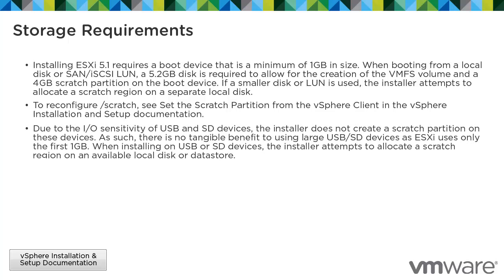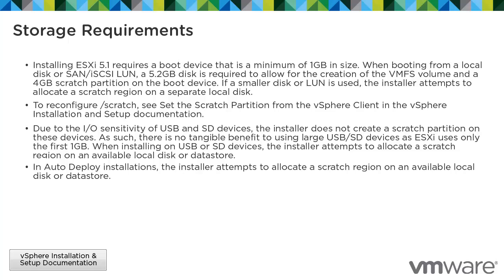Due to the I/O sensitivity of USB and SD devices, the installer does not create a scratch partition on these devices. As such, there is no tangible benefit to using large USB or SD devices, as ESXi uses only the first gigabyte. When installing on USB or SD devices, the installer attempts to allocate a scratch region on an available local disk or data store. In auto-deploy installations, the installer also attempts to allocate a scratch region on an available local disk or data store.